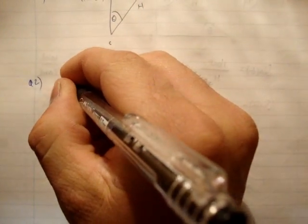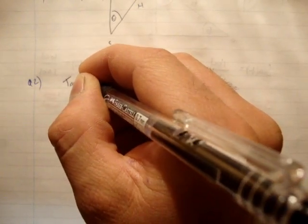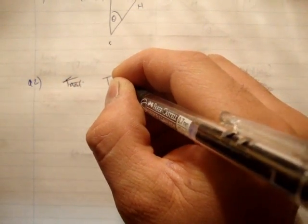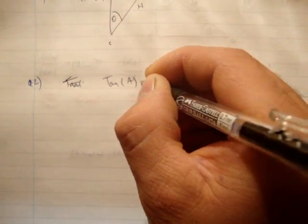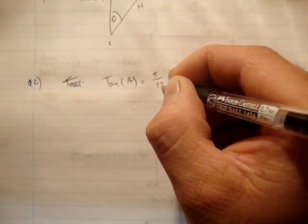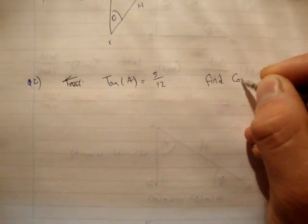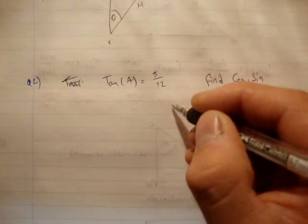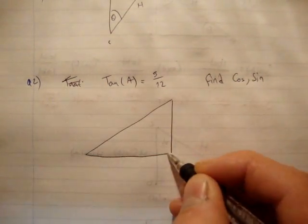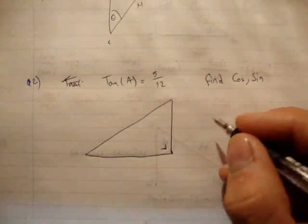Question two. It says all parts to be done without finding the value of A. Assume that A is between 0 and 90. Question one is as follows: if tan A is equal to 5 over 12, find cosine and sine.